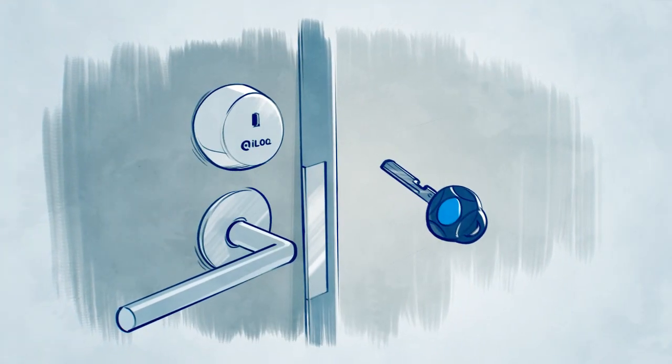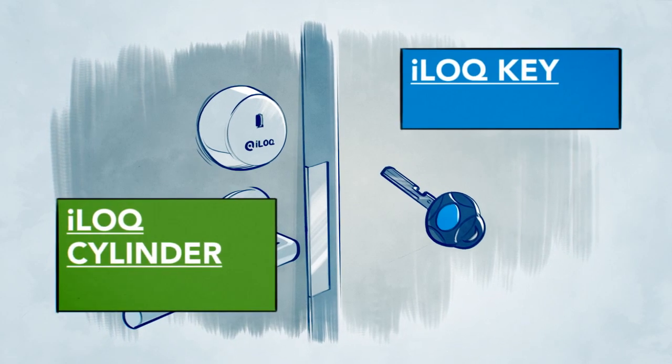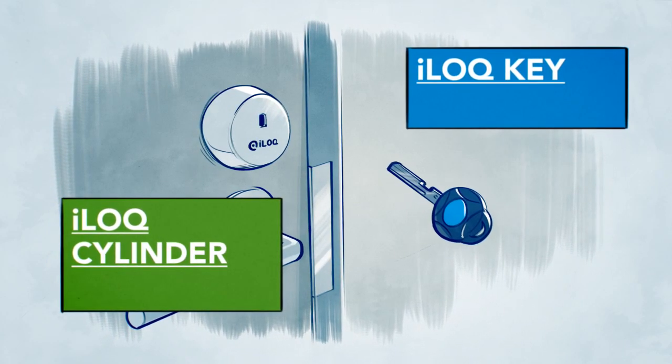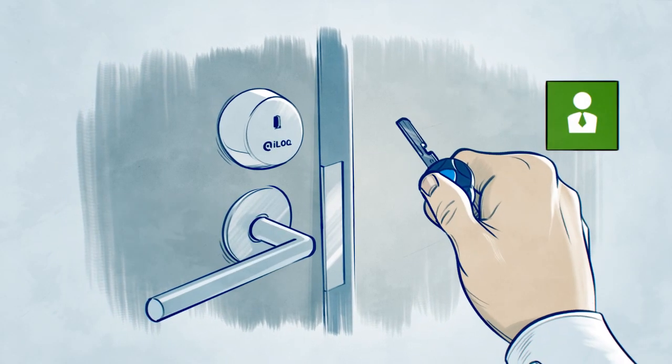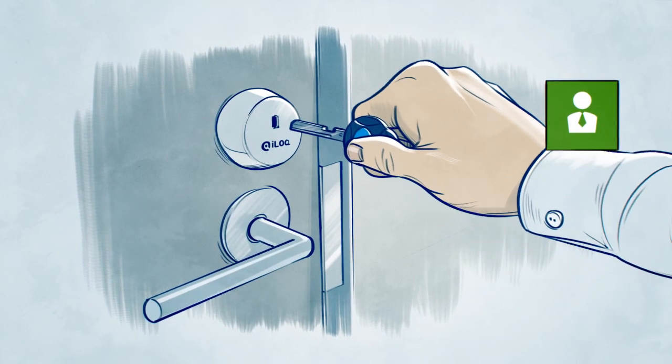I-Lock is a digital locking system. At its core is the world's first self-powered lock cylinder. I-Lock gets all its power from key insertion.